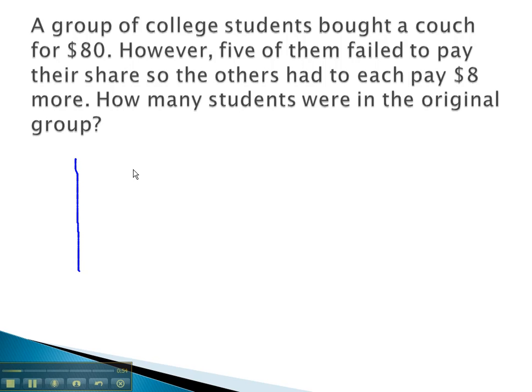In this problem, we have a group of college students making a purchase. We know we can take the number times the price per item, and that will equal the total revenue. The students bought a couch for $80. We don't know the number of students, and we don't know the price each student paid. But what we do know is $80 was the total amount exchanged in the purchase.